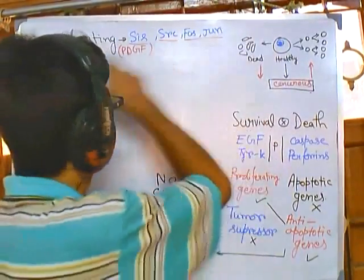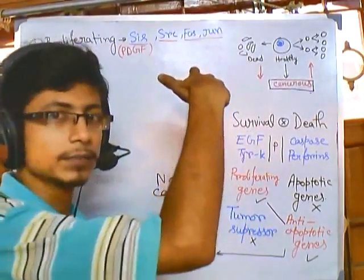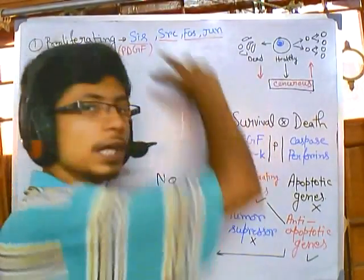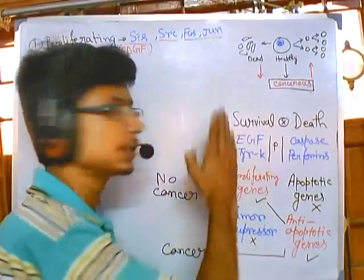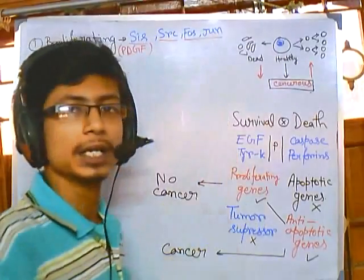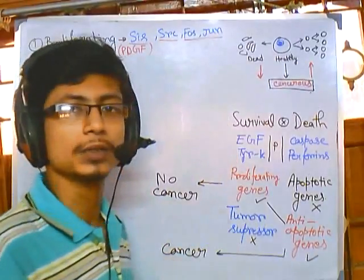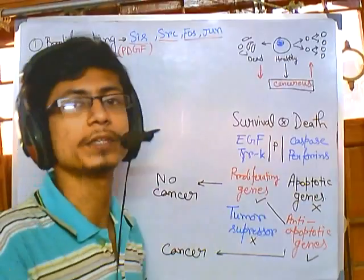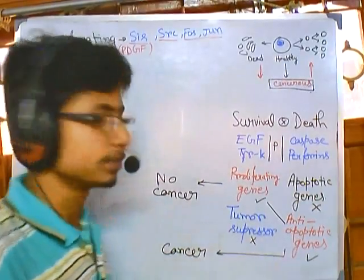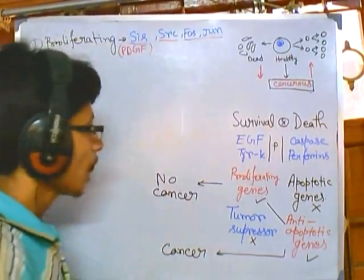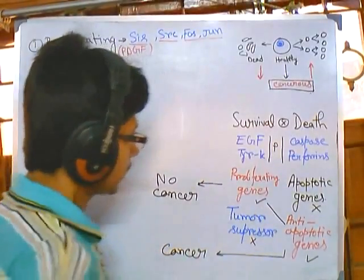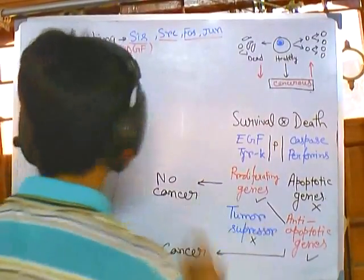If we modify and up-regulate any of these genes, they will help the cell become hyper-proliferative — the cell will grow and divide very rapidly and produce a tumor. On the other hand, let us look at the tumor suppressor genes.